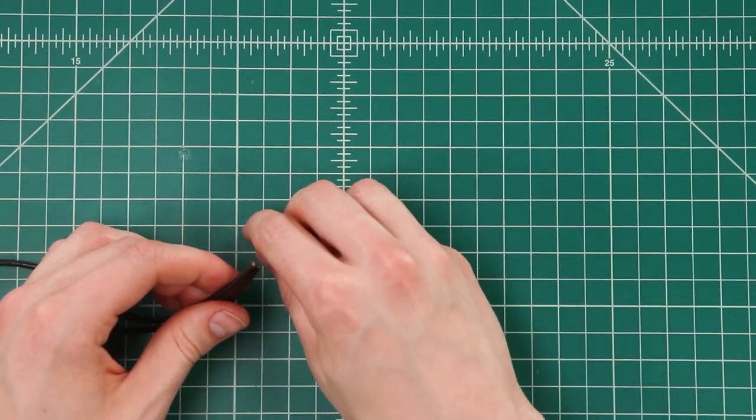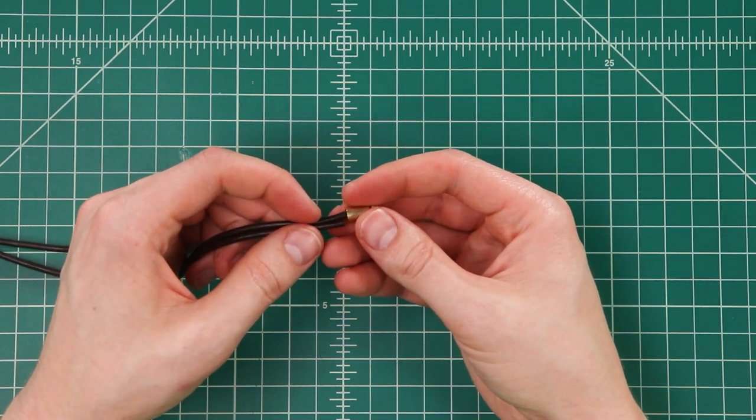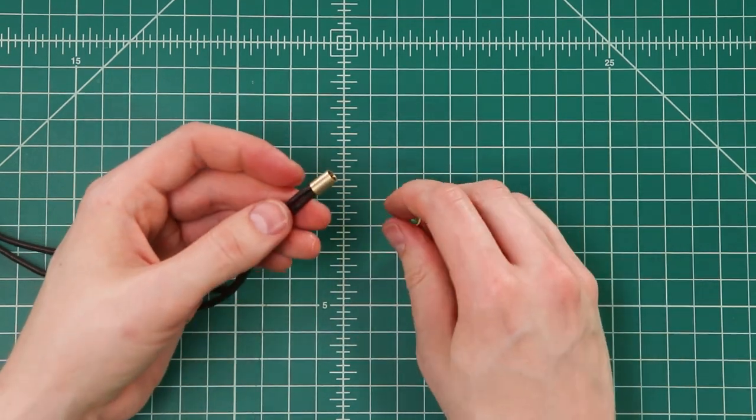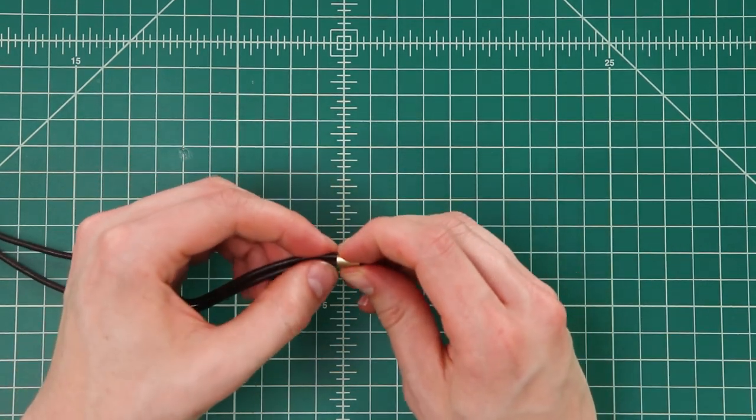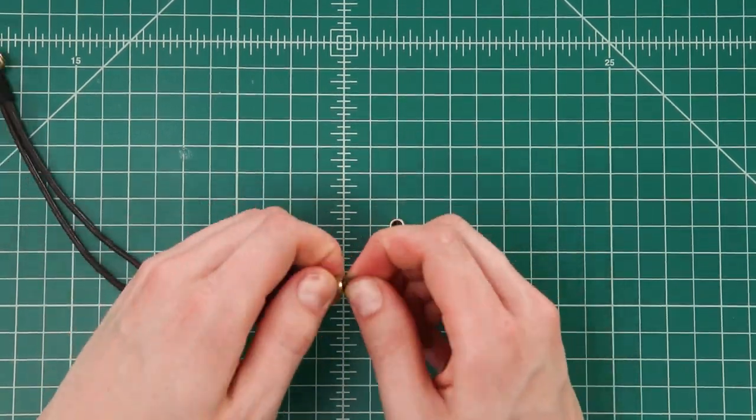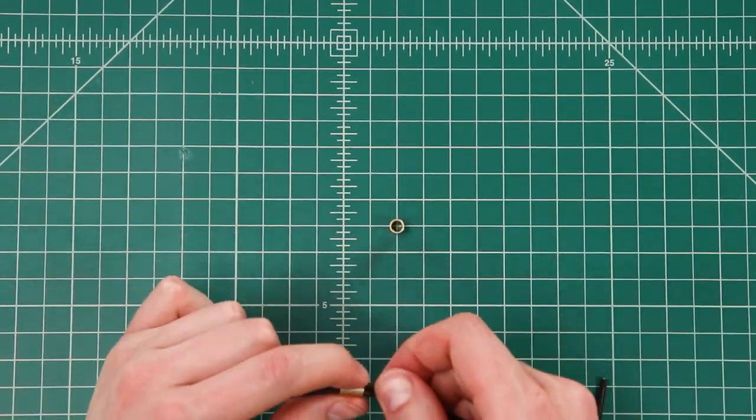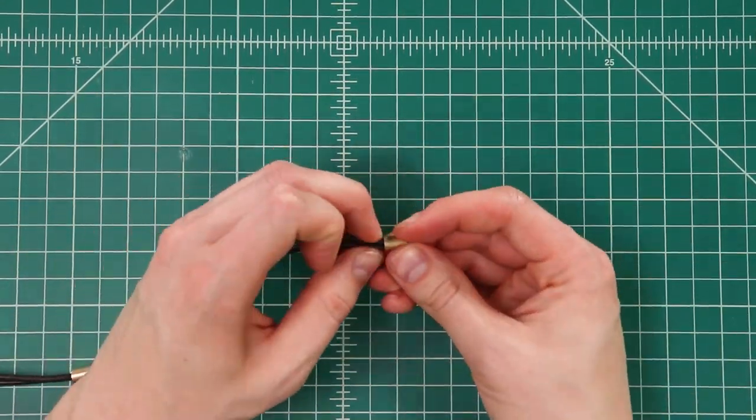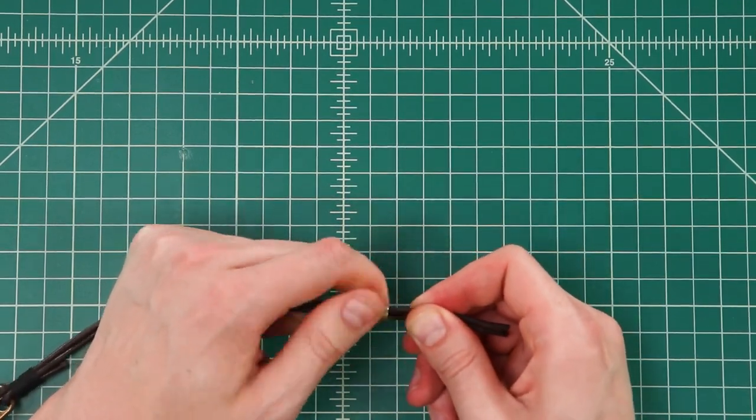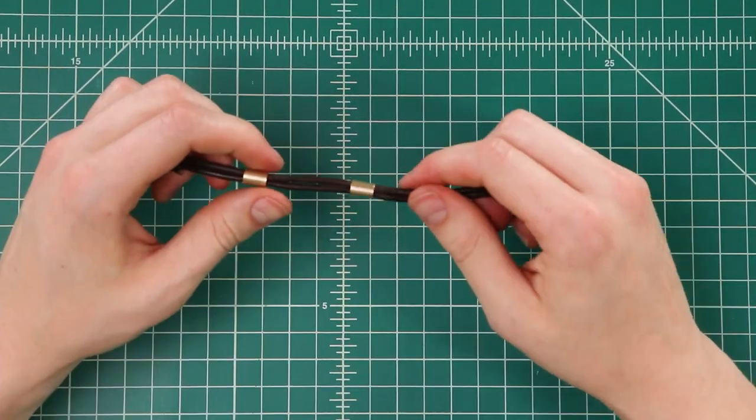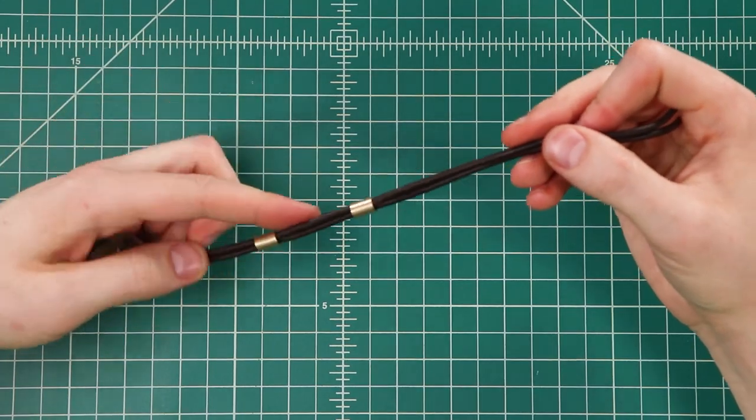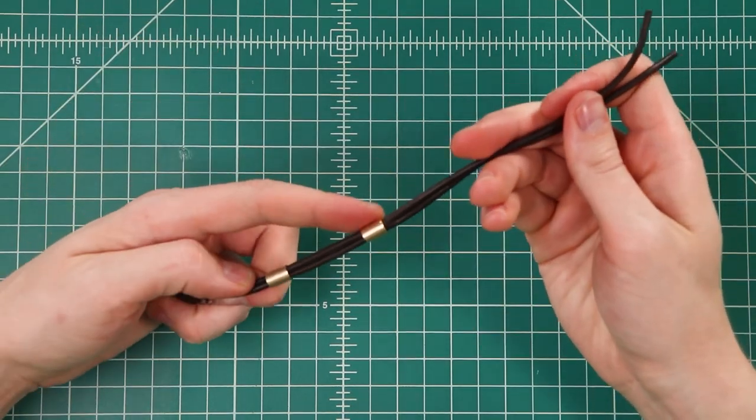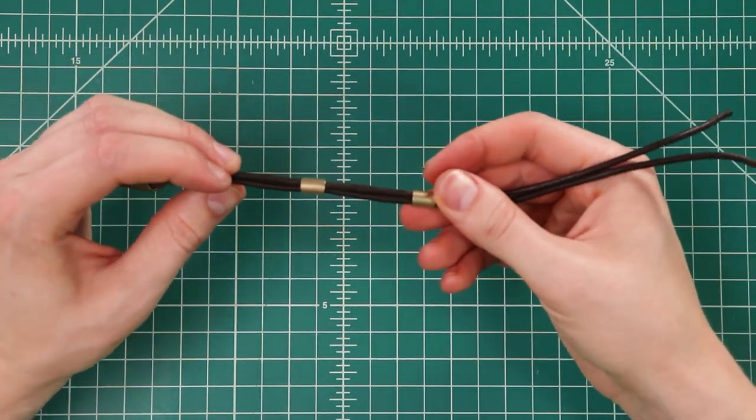We'll grab our two brass tube beads and I'm going to put them on both cords. It's a pretty tight fit and you want to be careful that you don't scuff up your leather too much. Before we do our whippings between the beads, we want to figure out our other end so that we know how to center these so they're not off center.